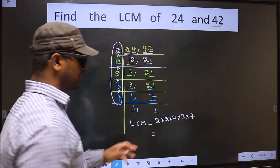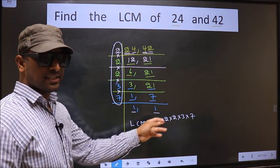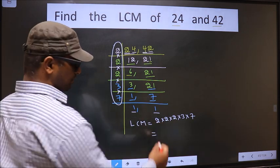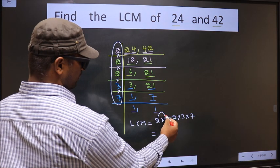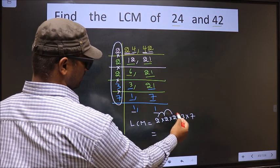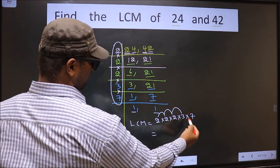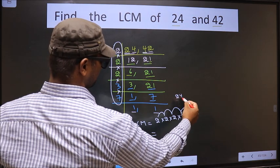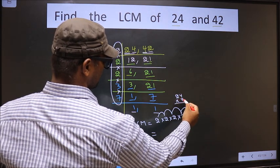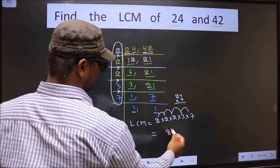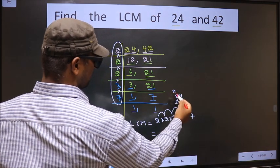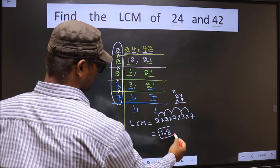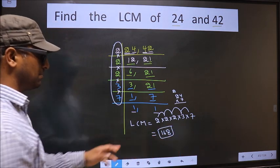So now let us multiply these numbers: 2 times 2 is 4, 4 times 2 is 8, 8 times 3 is 24, 24 times 7. 7 times 4 is 28 — carry 2; 7 times 2 is 14, plus 2 is 16. So 168 is our LCM.